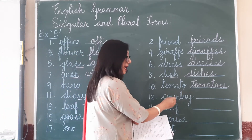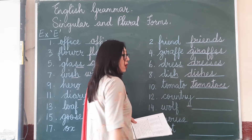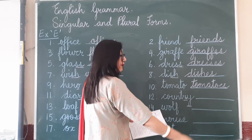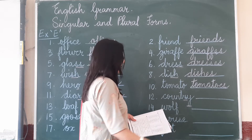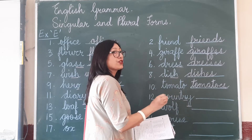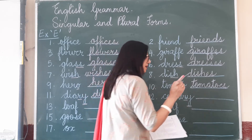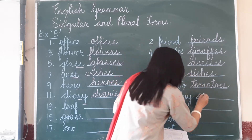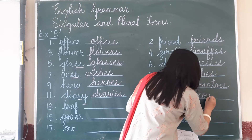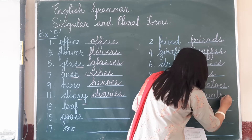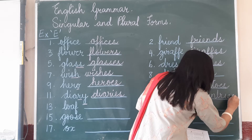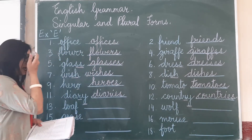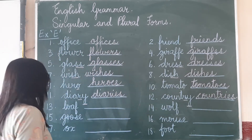'Country' — again, a noun ending in a Y. Look at the letter in front of Y: it is R. R is a consonant, so replace the Y with I-E-S — C-O-U-N-T-R-I-E-S — countries. One country, many countries.